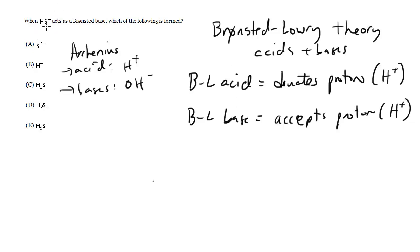When HS minus is acting as a Bronsted base, what is formed? It's going to be accepting a proton, so it's going to be accepting an H+.